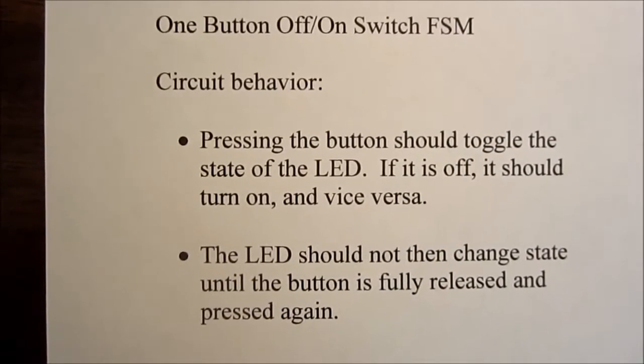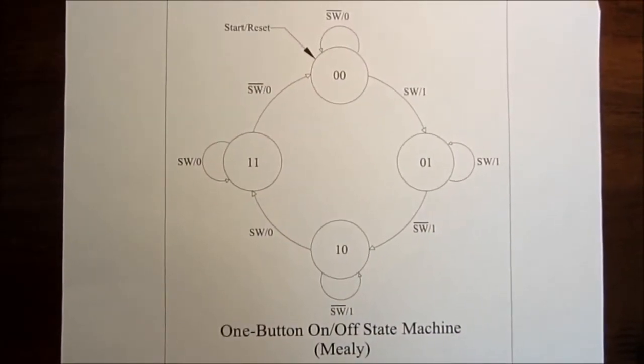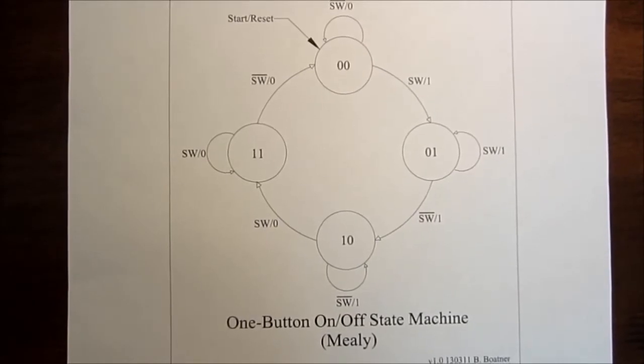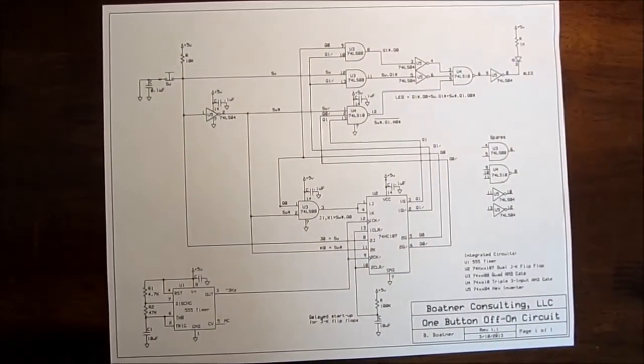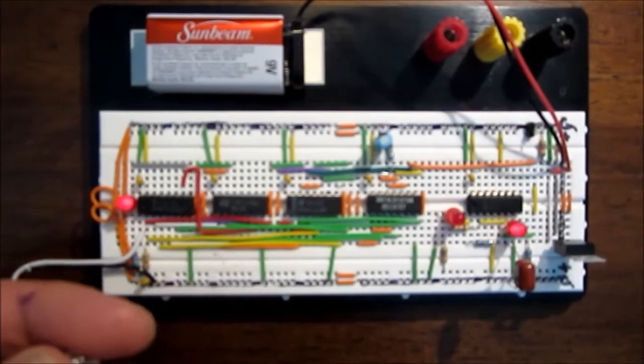You have taken the verbal description of the problem and developed a state diagram from that description. In this case, a four-state mealy machine. And from your next state tables and your Karnaugh maps, you have developed a schematic and you have built and tested your prototype.